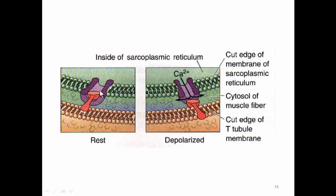You can see this purple thing in the membrane of the sarcoplasmic reticulum — this purple thing is a calcium channel. Right now the calcium channel is plugged. When an action potential travels down the T-tubule membrane, the plug is pulled out, and that allows calcium to leave the sarcoplasmic reticulum and enter into the cytoplasm. The T-tubule membrane is here, the cytoplasm or sarcoplasm is here, the membrane of the sarcoplasmic reticulum is here, and inside the SR there is calcium. If you unplug it, the calcium can come out into the cytoplasm — not out of the cell.